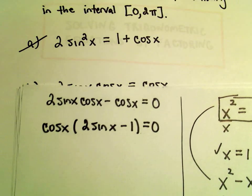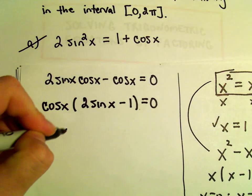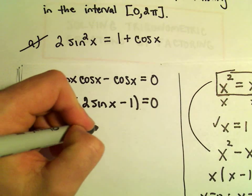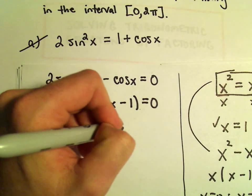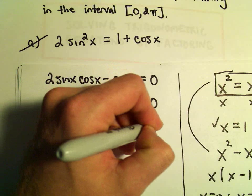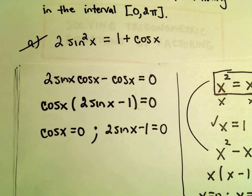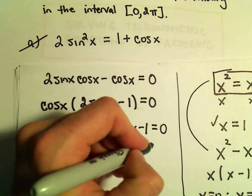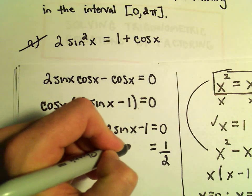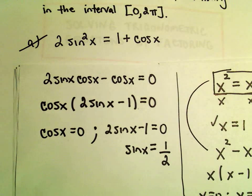Now I'm going to set each factor equal to 0. We've got to figure out when cosine x equals 0, then we'll set 2 sine x minus 1 equal to 0. If we solve the second equation, we can add 1 and divide by 2, and that gives us sine x equals one half.